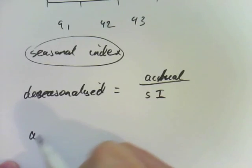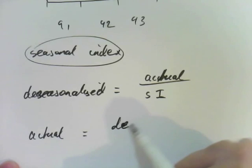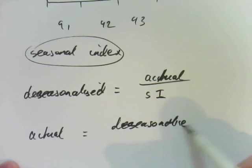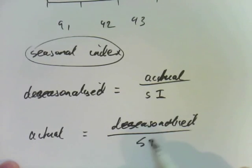To get the actual, that is the de-seasonalized divided by the seasonal index. So they're the two formulas you need to know. If you have the seasonal index you can work out the de-seasonalized by doing actual divided by seasonal, or you can work out the actual if you have the de-seasonalized divided by the seasonal index. These are things they will ask you to do.